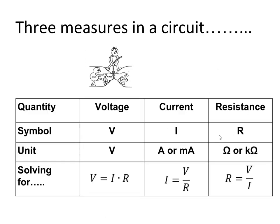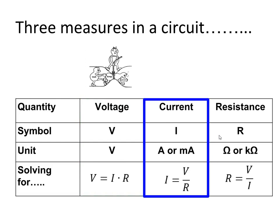Again, let's look at the three quantities. Voltage is the push — in our water analogy it is the pump that pumps the water through the pipes. The symbol for voltage is a capital V, the unit of measurement is also V, and to calculate V we multiply the current by the resistance. Next, current: the symbol is capital I, and the unit for current is amps or milliamps. To calculate current we divide the voltage by the resistance.